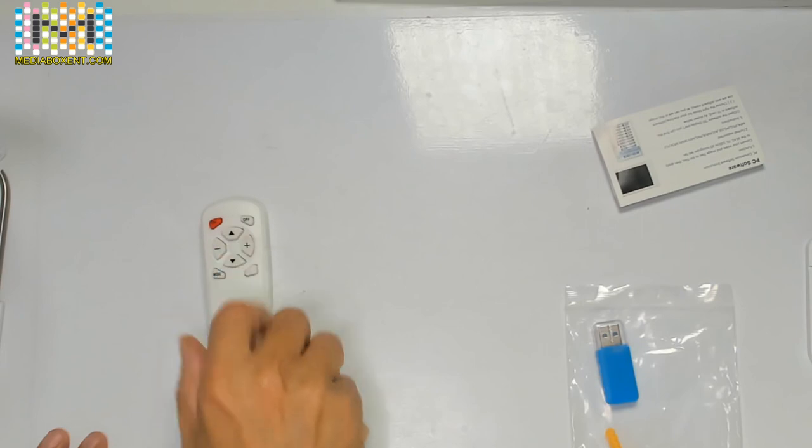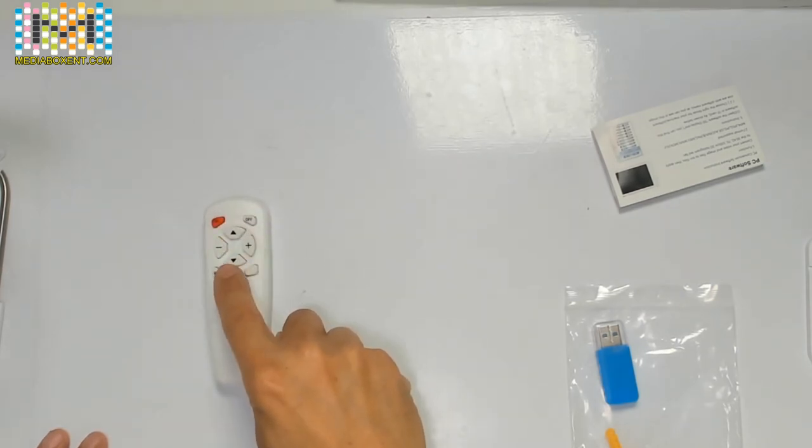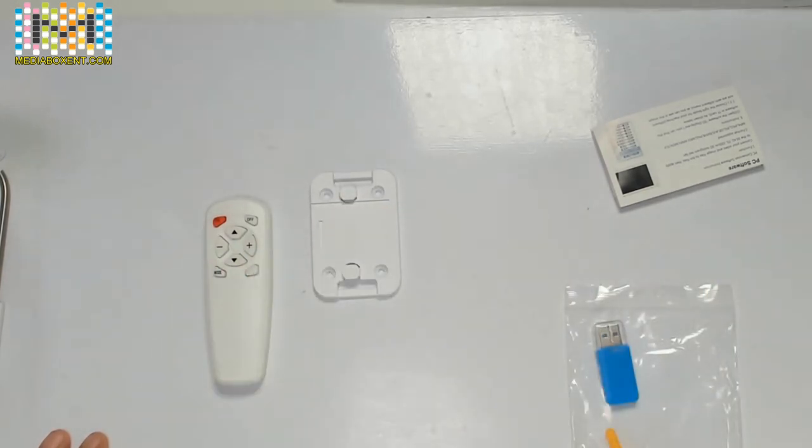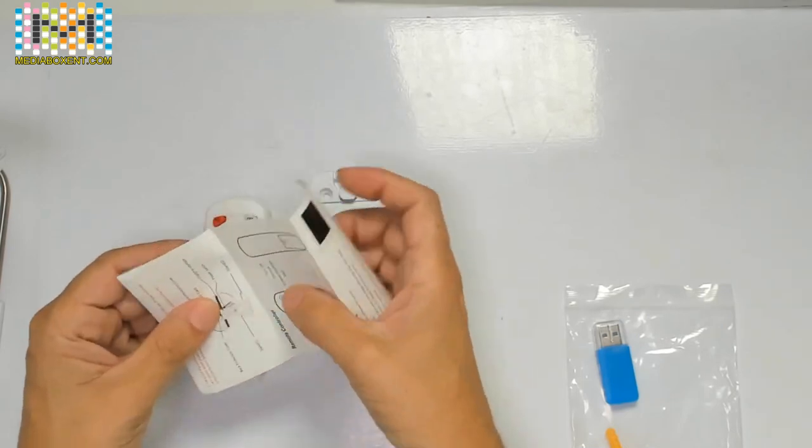And the remote control. So you can turn it off, turn it on, and change different modes. If you want to loop always to the same graphic, we can do that too. The mountain bracket for the wall. Now, the instructions, they're pretty simple instructions.